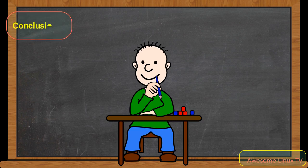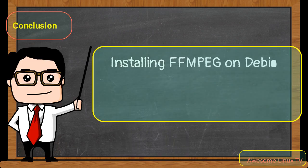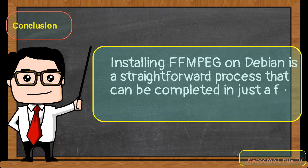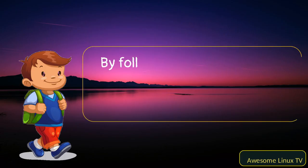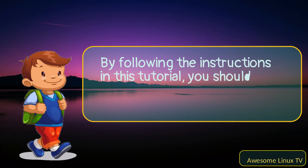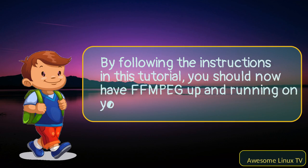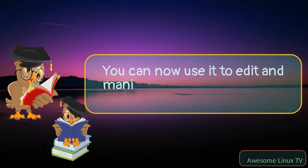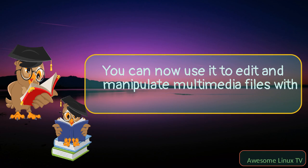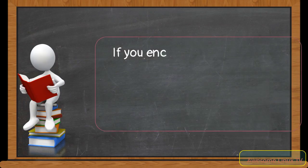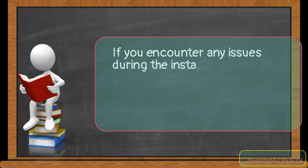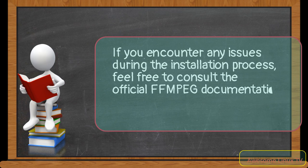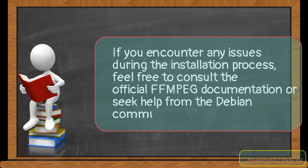Conclusion. Installing FFmpeg on Debian is a straightforward process that can be completed in just a few steps. By following the instructions in this tutorial, you should now have FFmpeg up and running on your machine. You can now use it to edit and manipulate multimedia files with ease. If you encounter any issues during the installation process, feel free to consult the official FFmpeg documentation or seek help from the Debian community. See you then.